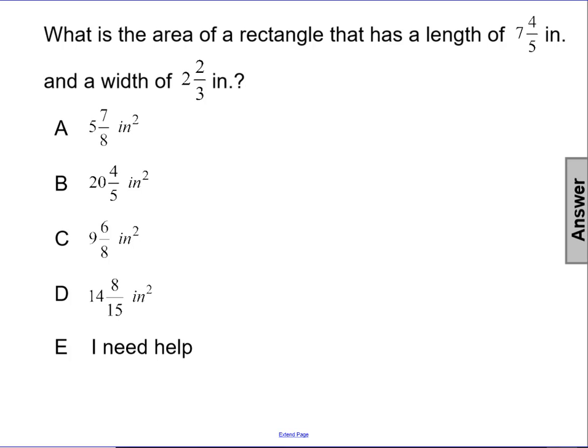What is the area of a rectangle that has a length of seven and four-fifths inches and a width of two and two-thirds inches?